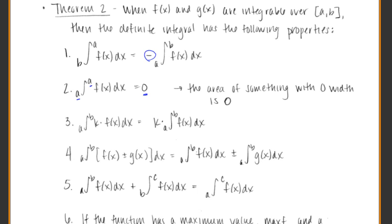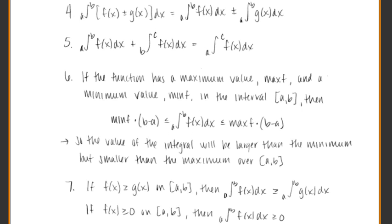Looking at property number 6: if a function has a maximum value and a minimum value, then the minimum value times the interval length is going to be smaller than the overall area, which is then smaller than the maximum value times the interval. Property 7 says if one function is larger than another over a specific interval, its area under the curve is going to be larger than the area under the second one.